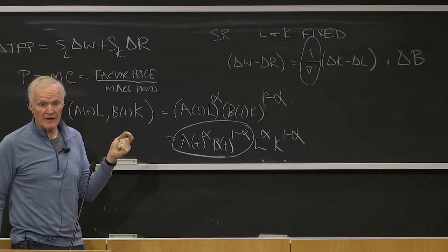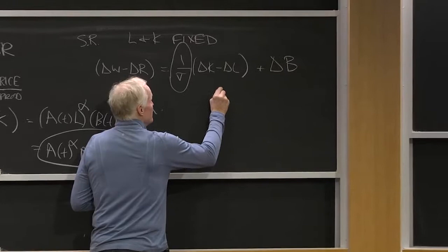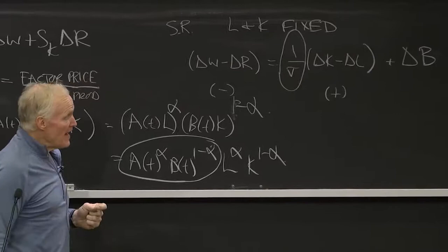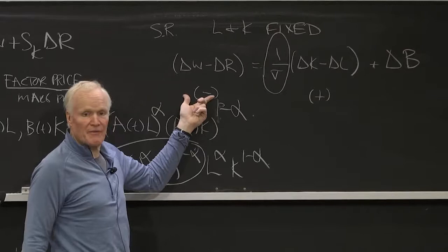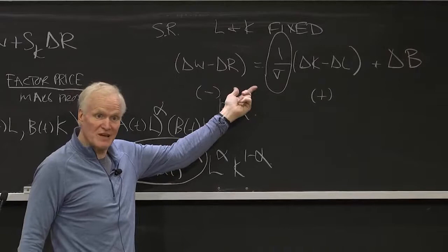Often, you can sign the direction of technological bias. I'll give you an example. Let's say that this is positive, and this is negative. Well, in that case, you would know for sure that delta B would have to be a negative number. Because what you're seeing is K is going up relative to L, but W is going down relative to R. That can't happen unless there was technological bias.